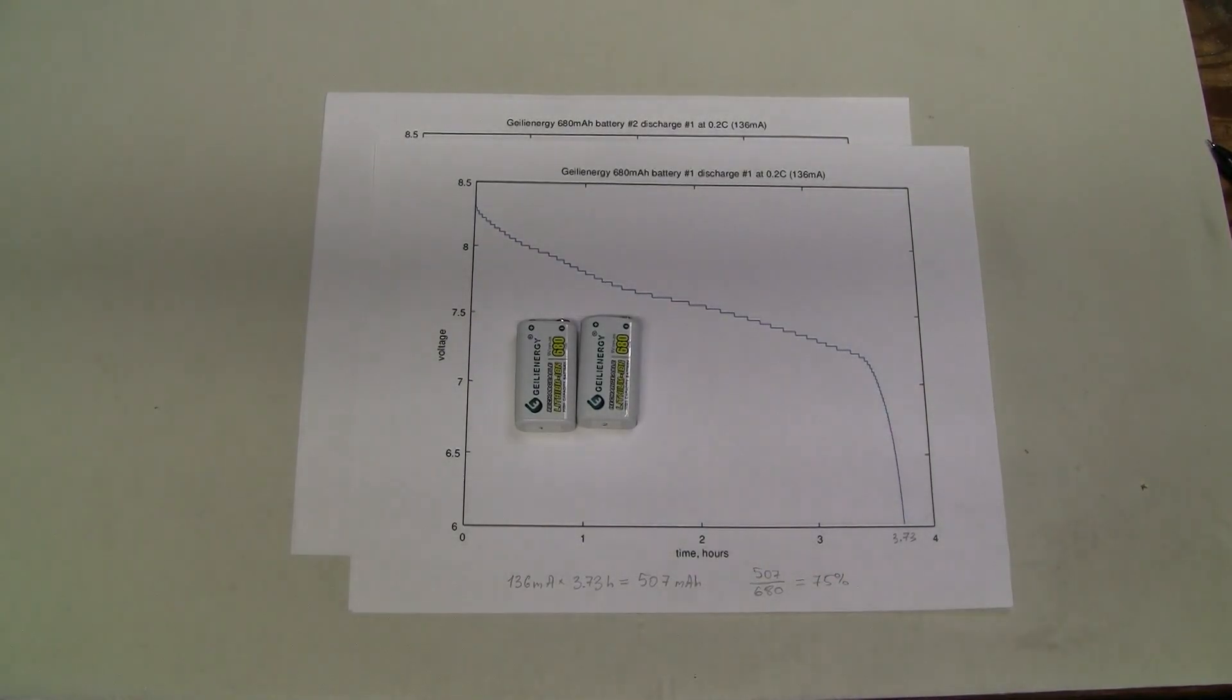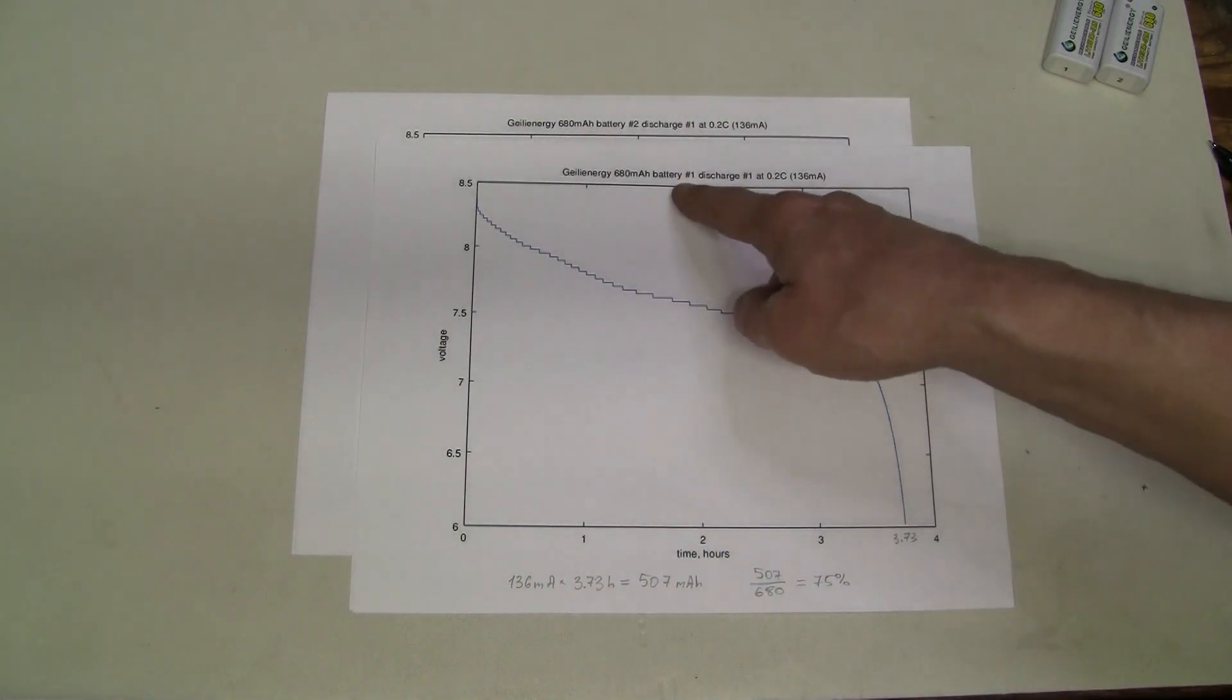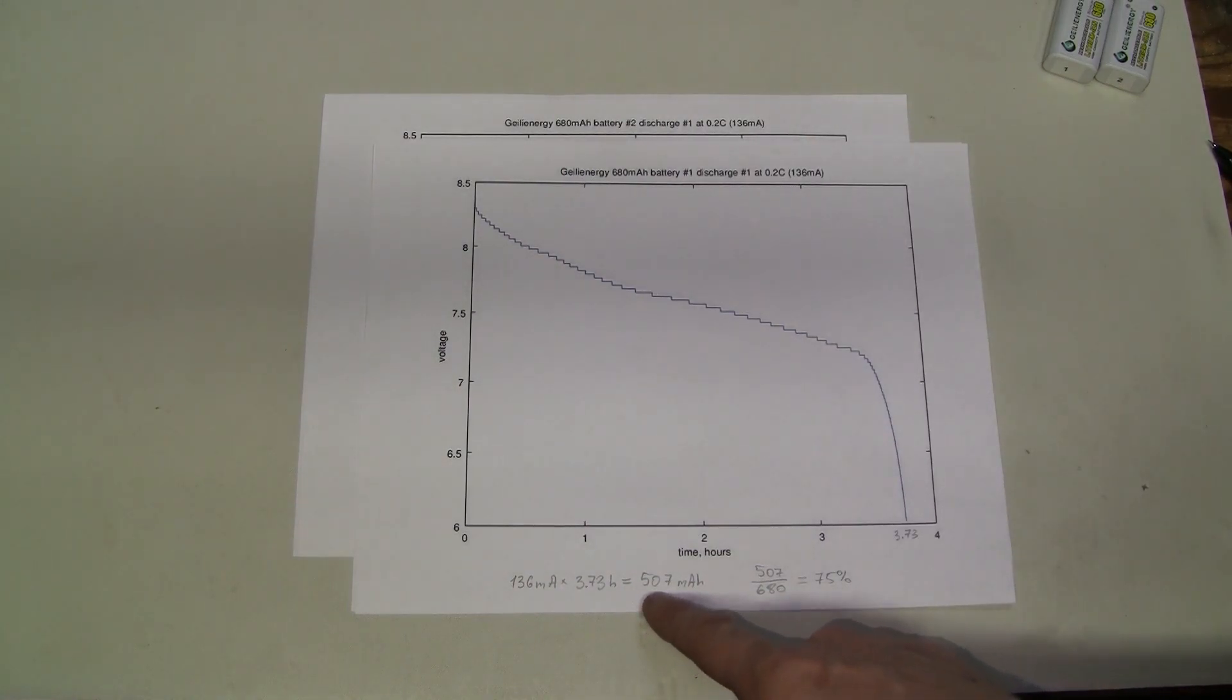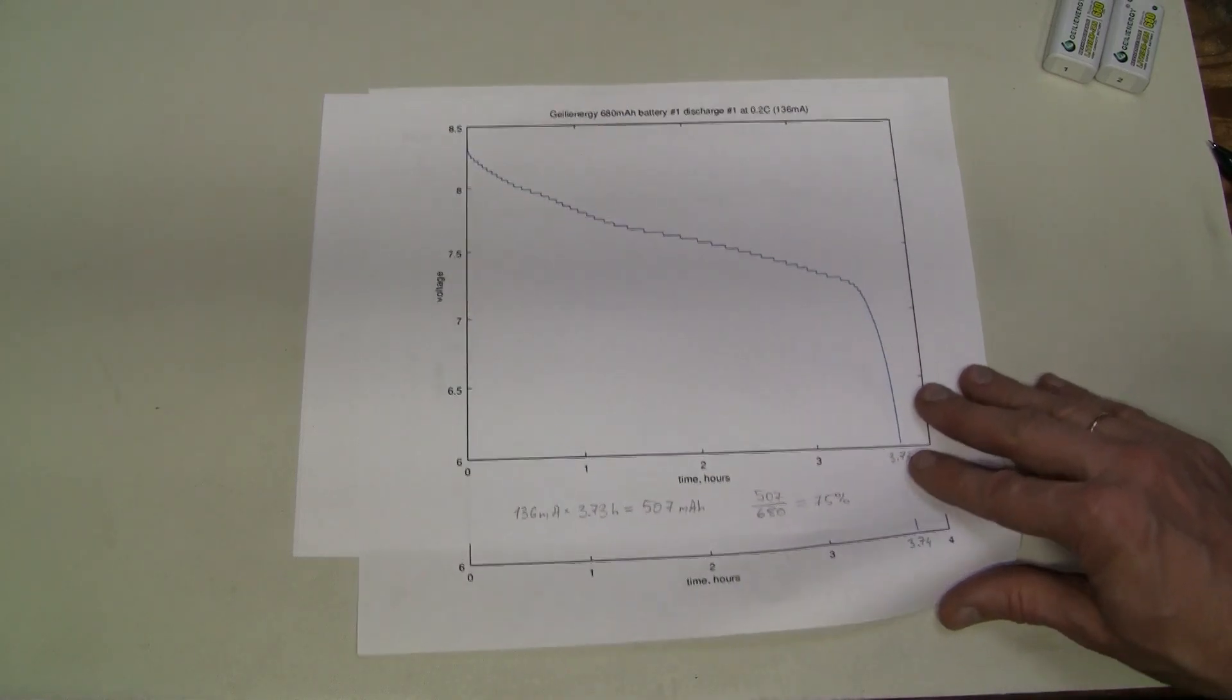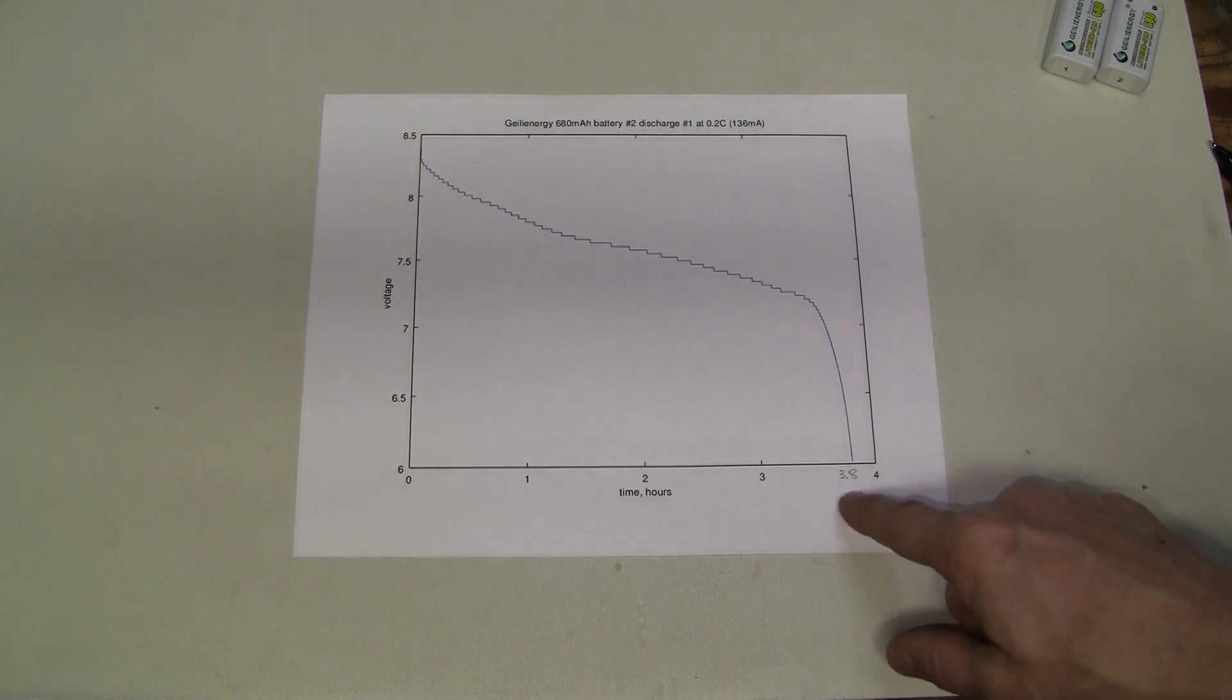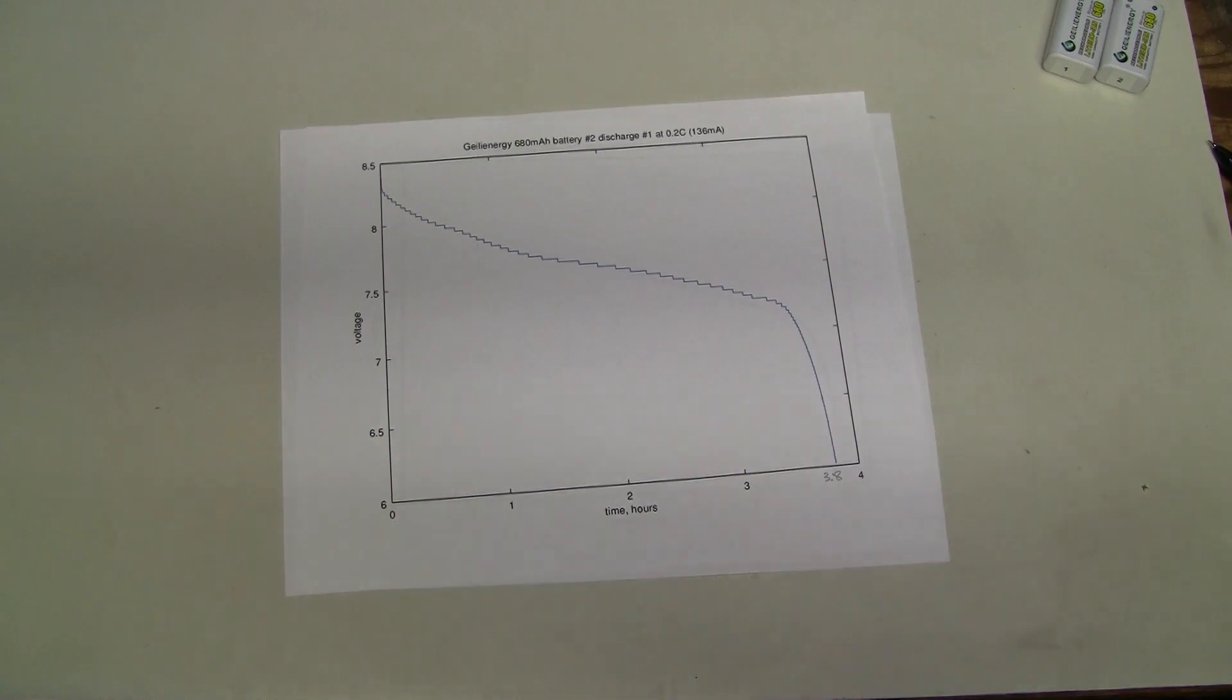Now these two. They are rated at 680 mAh. I labeled them as well 1 and 2. And here we have two tests for each. This is battery number 1 and it showed about 507 mAh or about 75% of rated capacity. And the discharge number 2 was almost identical to the first one so I didn't even bother to calculate here. And the second battery showed almost identical results as well, 3.8 hours and 3.78 hours. Very consistent results and about 75% of the rated capacity.